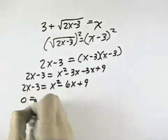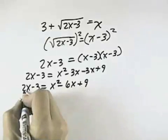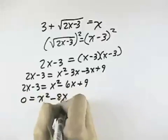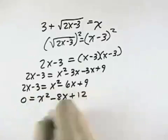Now we want everything on one side of our equation. So we have the x squared and a minus 6x, but I'm going to subtract 2x from both sides to make it minus 8x. And then I have plus 9, but I'm going to add 3 to both sides, so this will become plus 12.